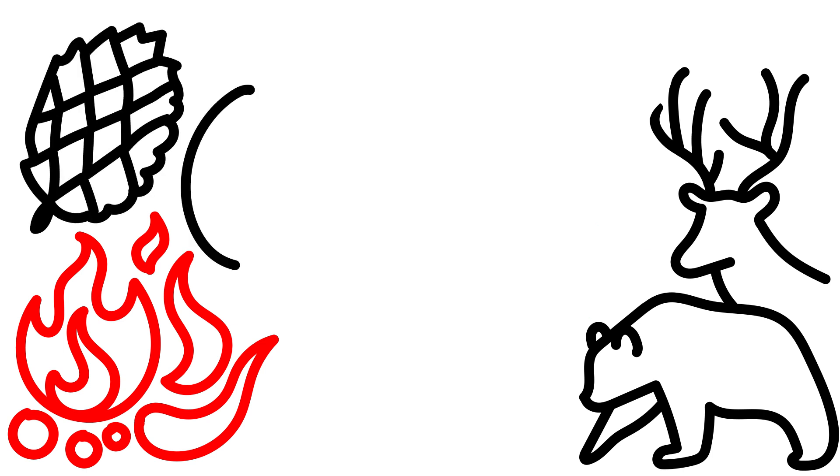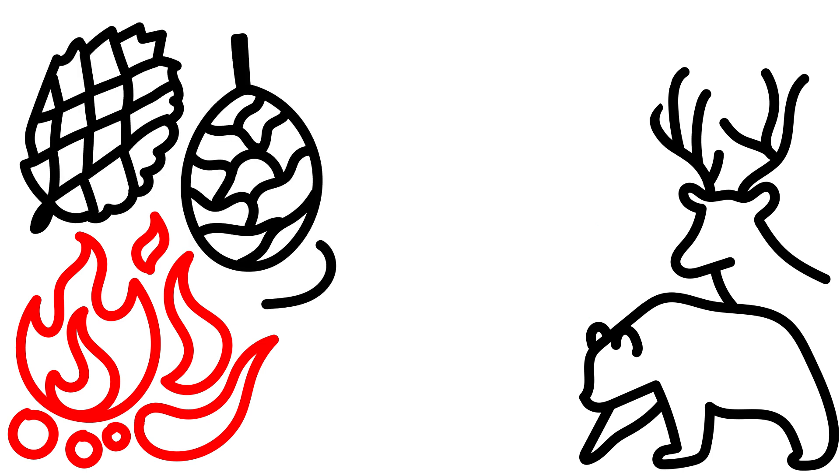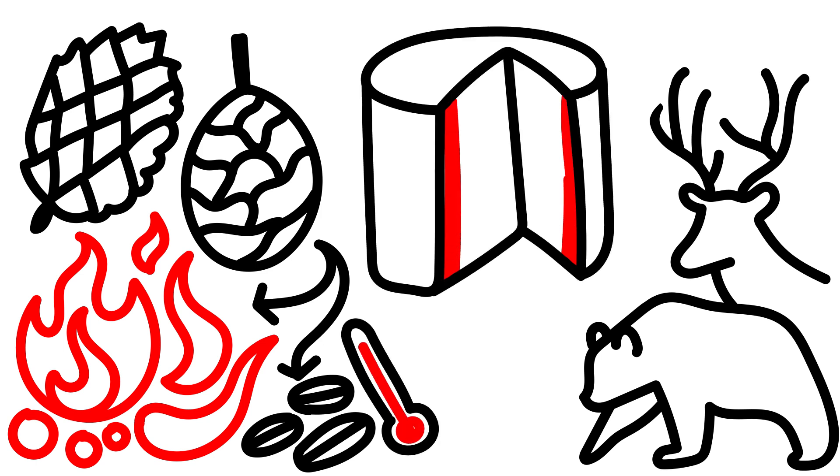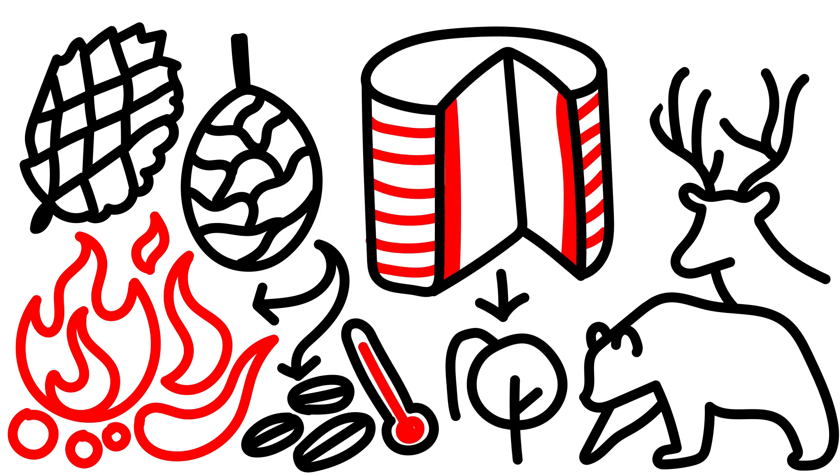Seeds of trees like the bishop pine and sequoia have evolved to withstand high temperatures and only open when they are heated. Trees with thick layers of fire-resistant bark help them regrow after the fires are extinguished.